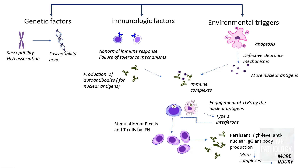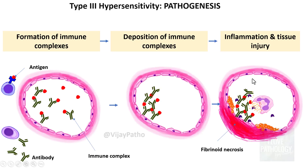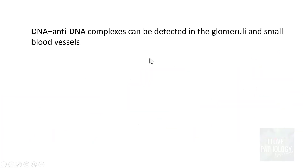Now, what is the mechanism of injury in the tissues? The most common mechanism of tissue injury is type 3 hypersensitivity reaction. Immune complexes are formed and deposited in various tissues as well as blood vessels. Once immune complexes are deposited, lots of cells are activated, leading to production of more cytokines and then inflammation and injury. The most common antibodies are anti-nuclear antibodies — DNA/anti-DNA complexes can be detected in the glomeruli as well as various small blood vessels.